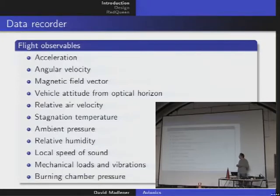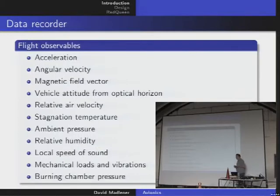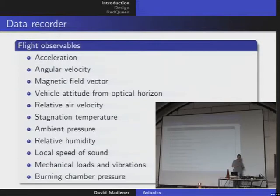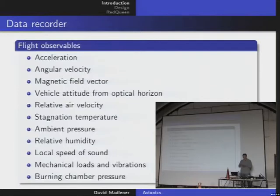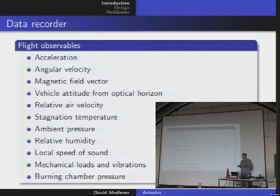For a rocket motor, it's very important to see how it's operating. The burning chamber pressure is relatively easy to obtain and shows you if everything is within operational margins. If something goes wrong, you have to abort the mission. These are some key flight observables — there are many more, but these are the main ones for our application.